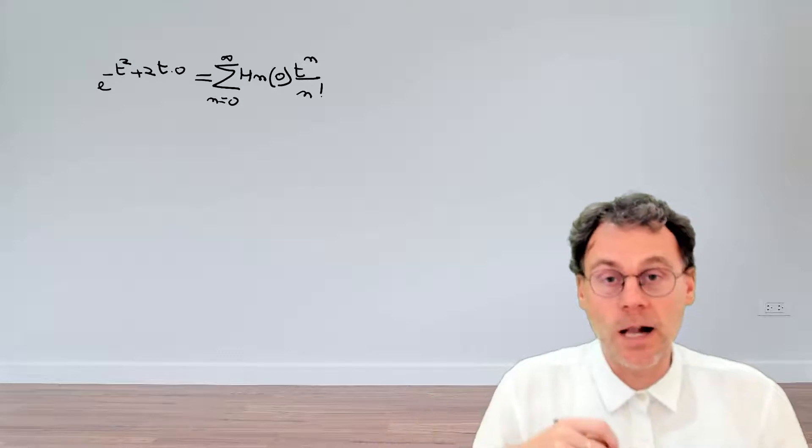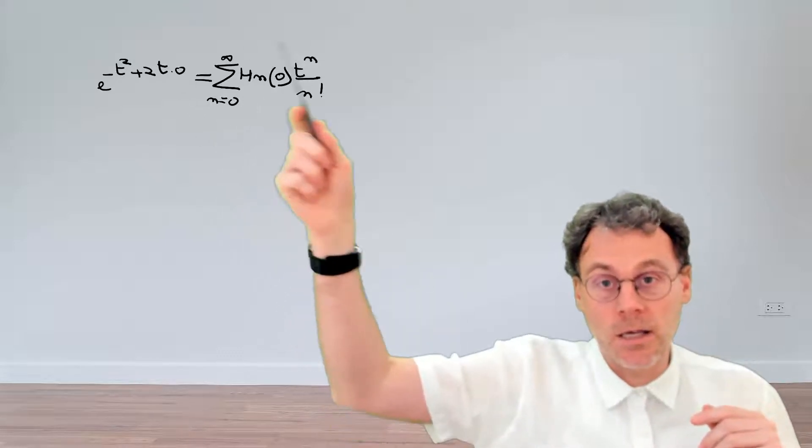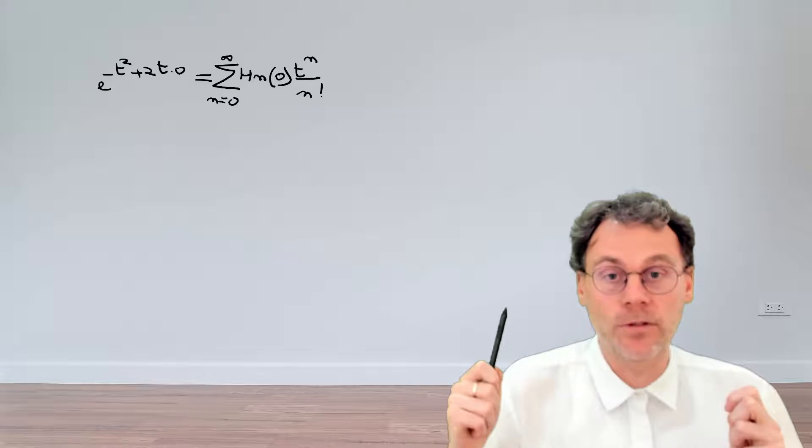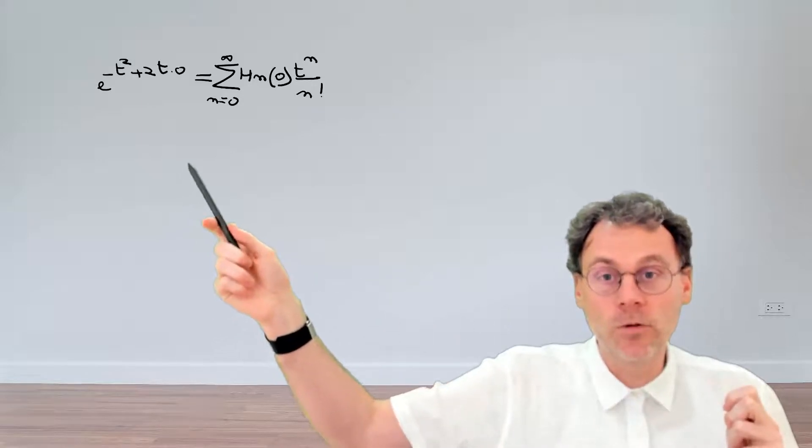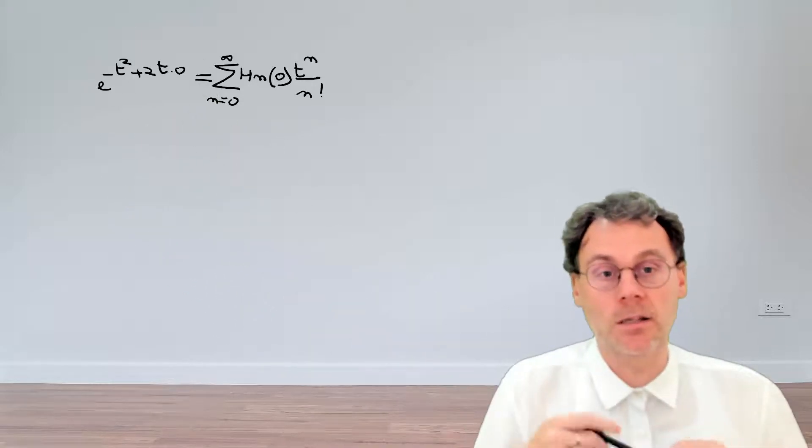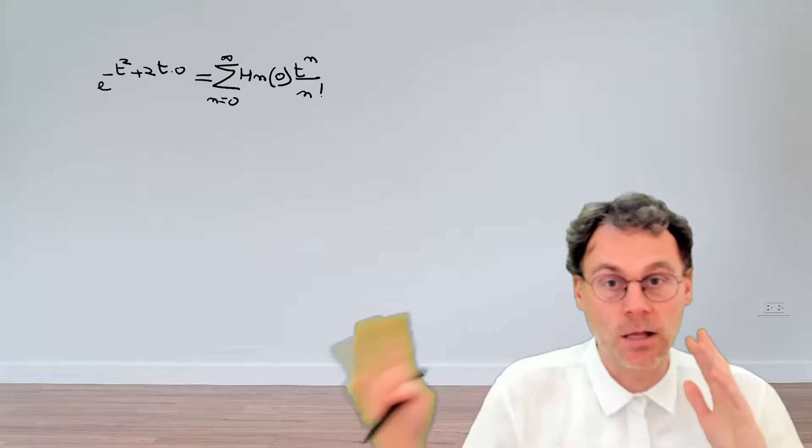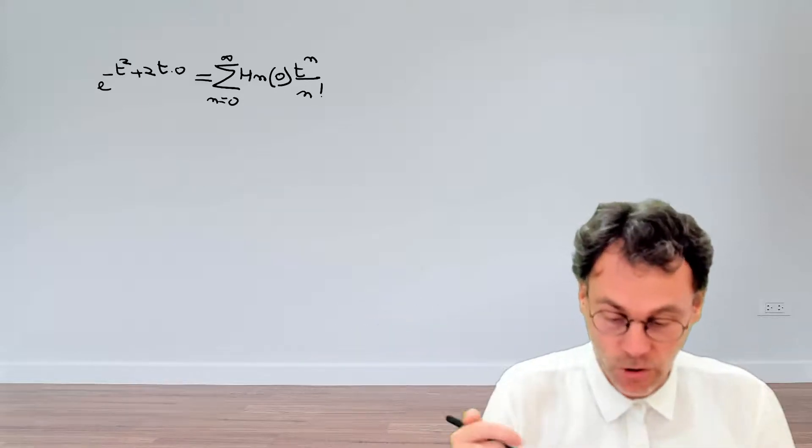So how does this help us? What can we do now? The right-hand side is a series of powers of t. So obviously, the plan here would be to also write the left-hand side as a series expansion and then see what happens if we can equate coefficients of t.